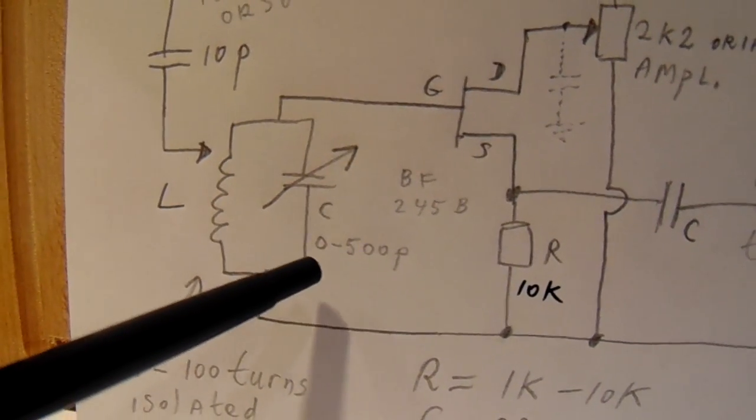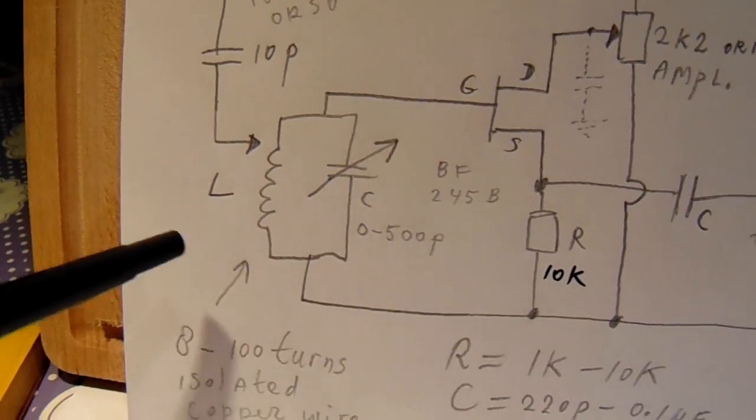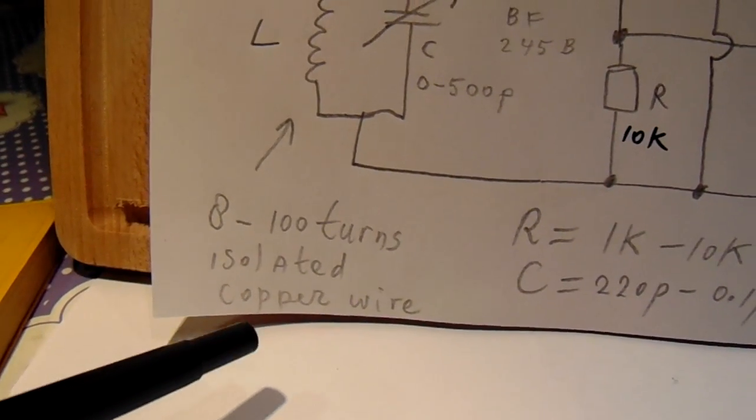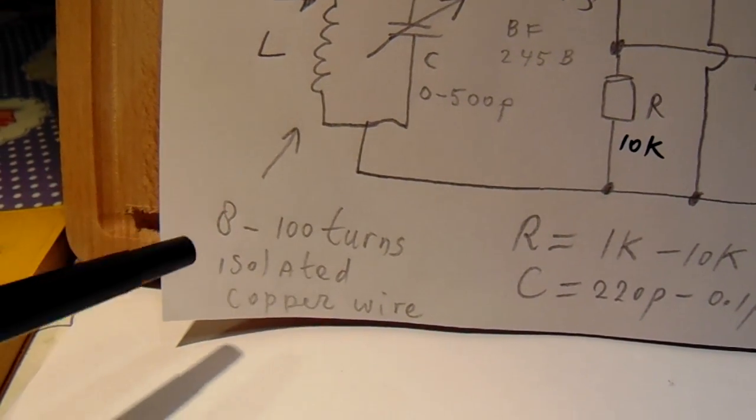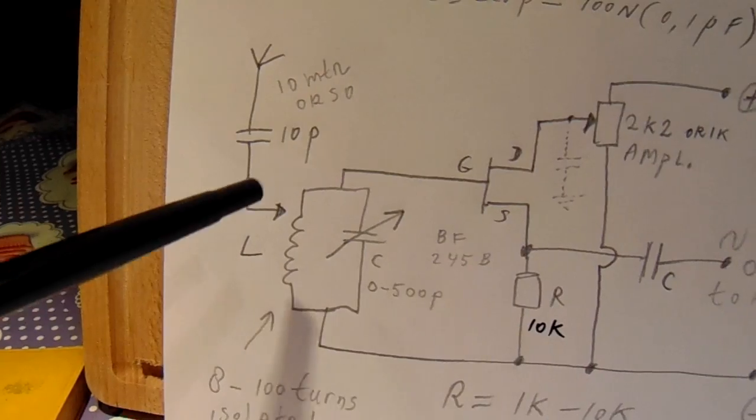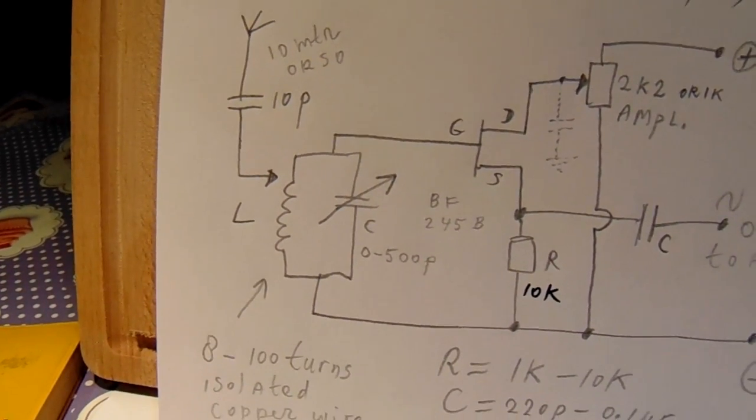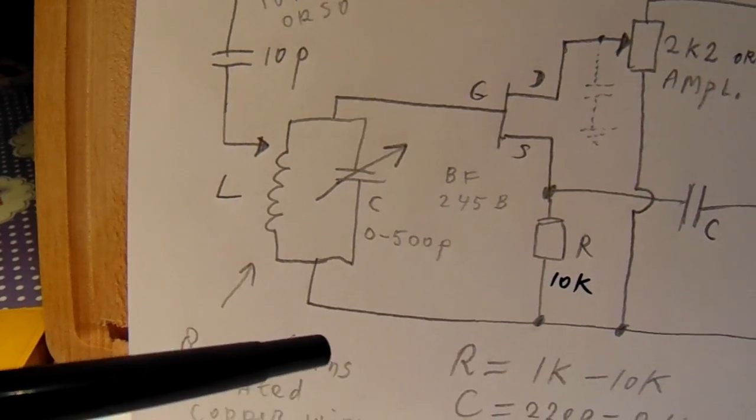So here we have a variable capacitor from zero up to 500 pF. Here we have for instance turns of isolated copper wire and this whole combination sets the frequency band. There are much more videos on my YouTube channel about this issue.